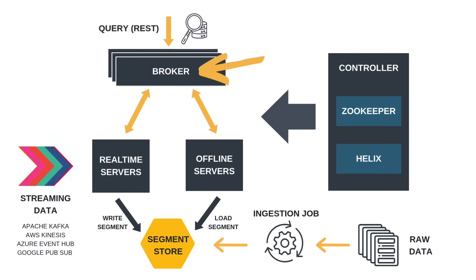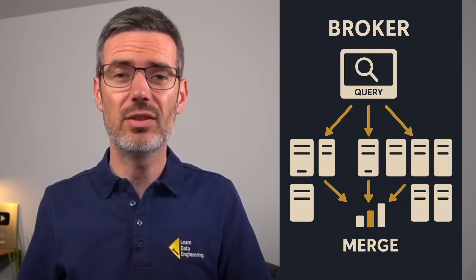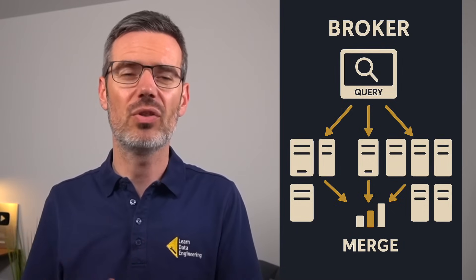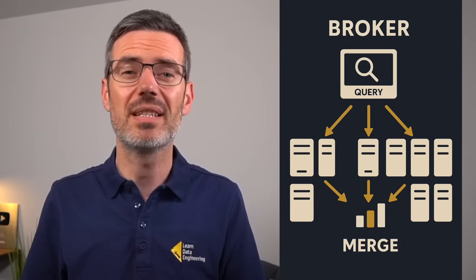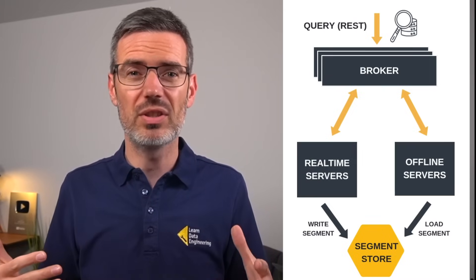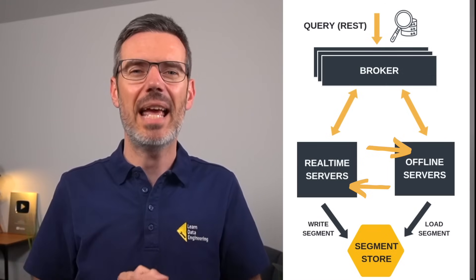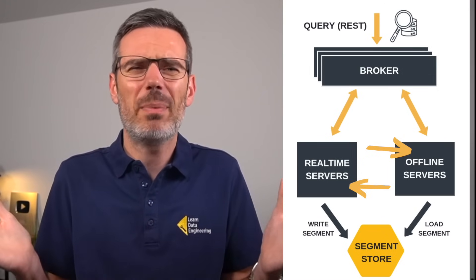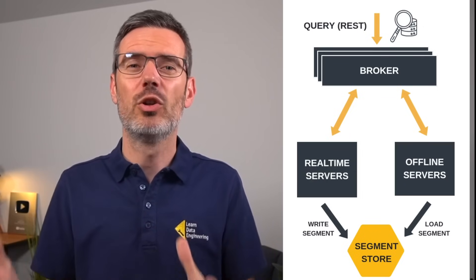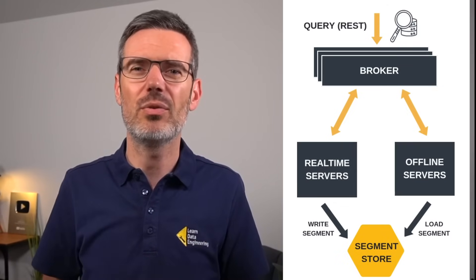At the top you've got the broker. This is where queries enter the system, usually through a REST API. The broker acts as a smart coordinator — it figures out which servers hold the data relevant to the query, sends the right subqueries to just those servers, gathers the partial results, merges them, and returns the final response. Brokers are stateless, which makes them easy to scale. Because the broker sits in front of both real-time and offline servers, it can handle hybrid queries. For example, a query over the last 30 days could pull fresh events from real-time servers and historical data from offline servers, and Pinot stitches it together behind the scenes.